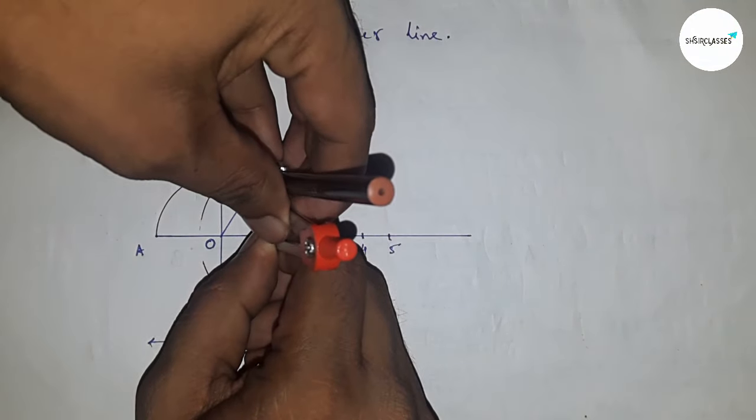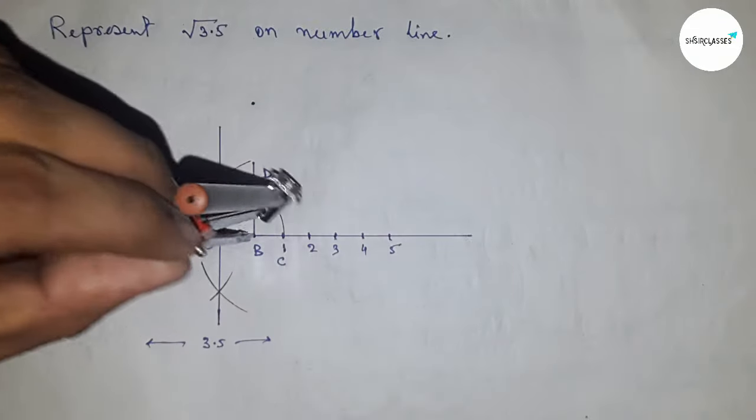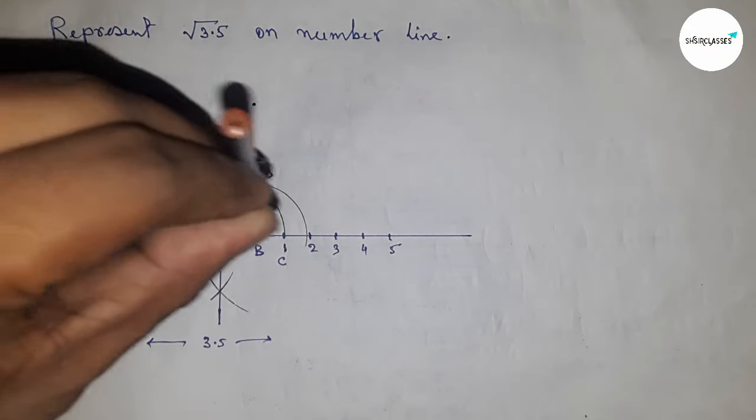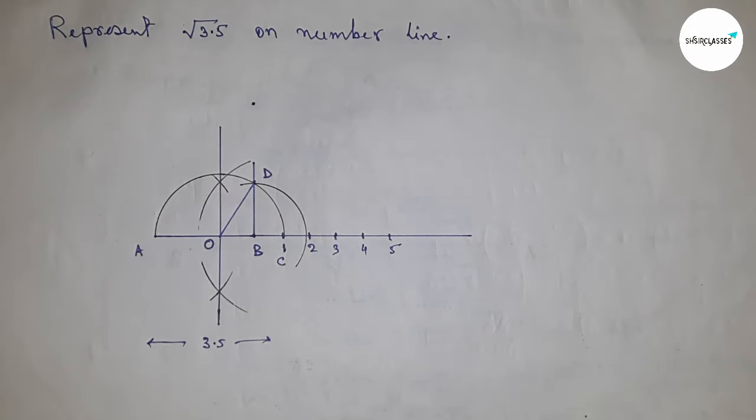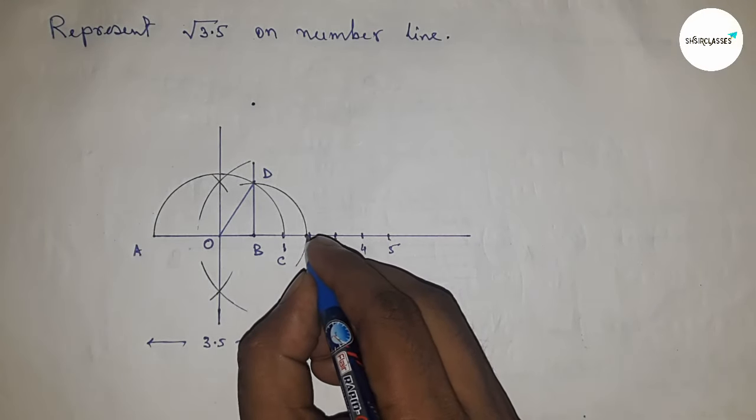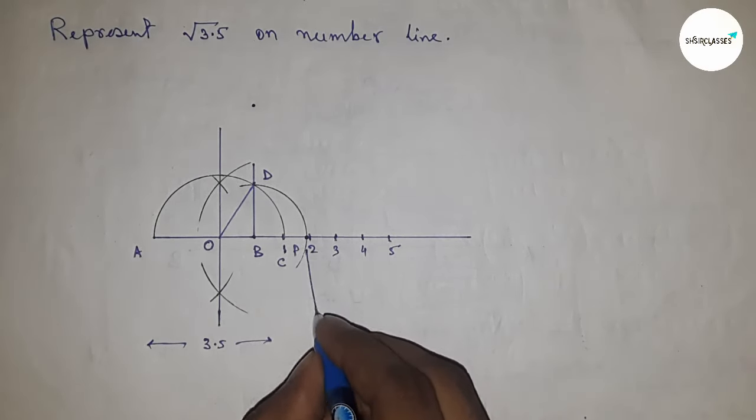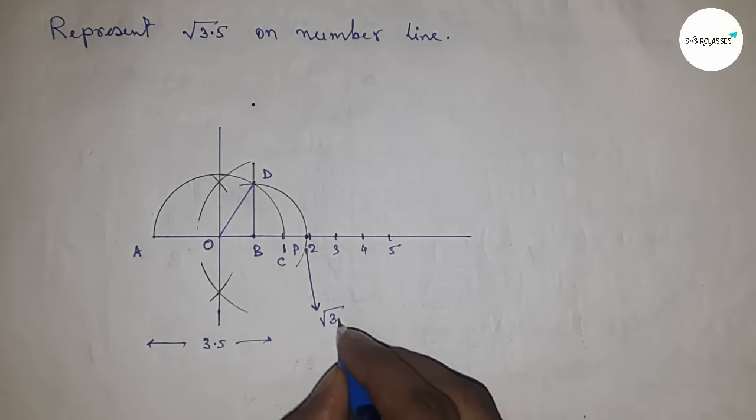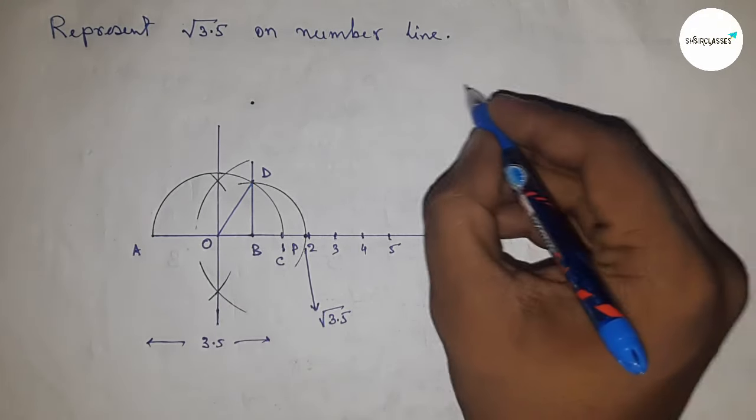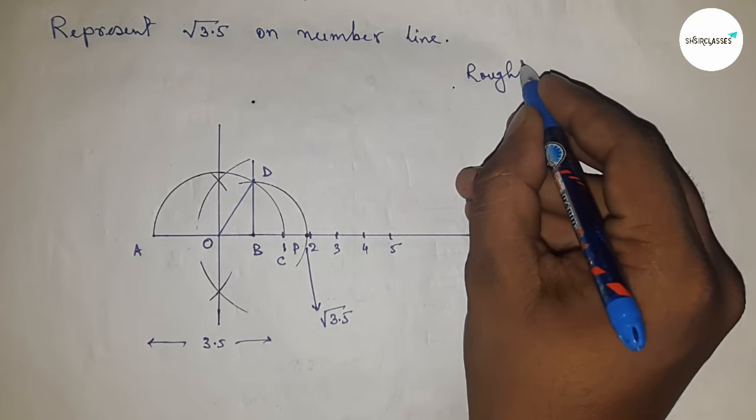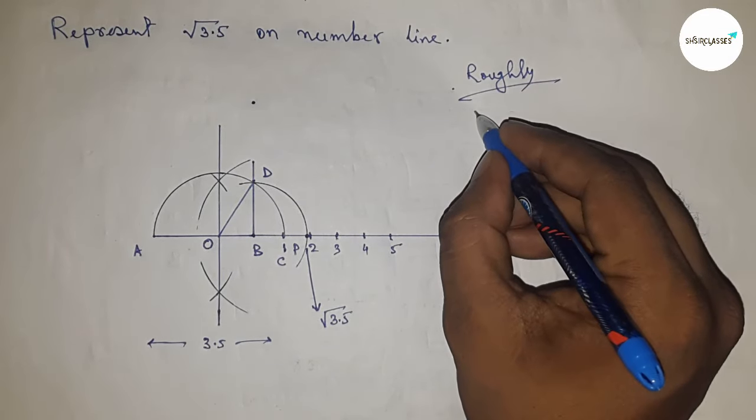Now, take the length of BD with a compass and draw an arc which cuts the number line at point P. This is the representation of root 3.5.